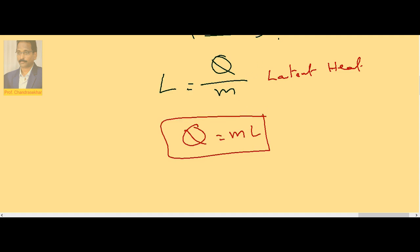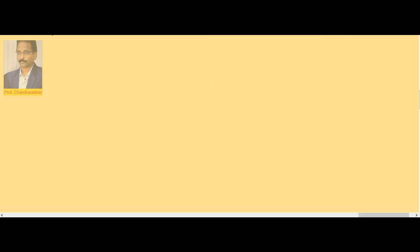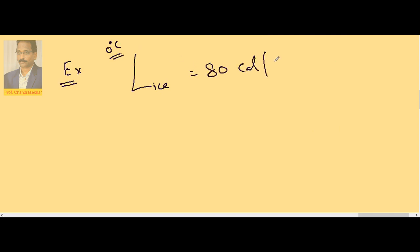This relation Q = ML is useful when state change is taking place — temperature is constant but state change occurs. For example, the latent heat of ice (melting) is 80 calorie per gram, possible at 0 degrees centigrade.